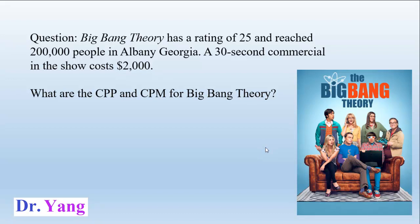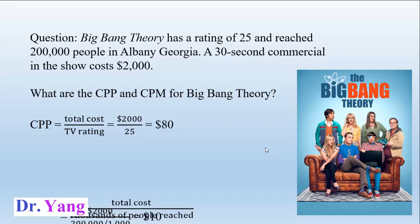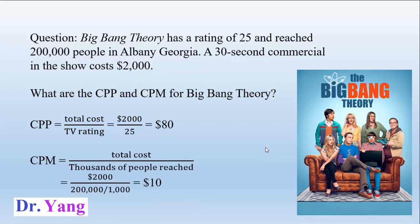If you understand the concept and remember the formula, it's pretty easy to calculate CPP and CPM. CPP means you use the total cost divided by the rating. The total cost is $2,000 and the rating is 25, so you get $80. That means you spend $80 to reach one rating point. For CPM, total cost divided by thousands of people reached — we have 200,000 people, so you use $2,000 divided by 200, and you get $10. That means you spend $10 to reach a thousand people.